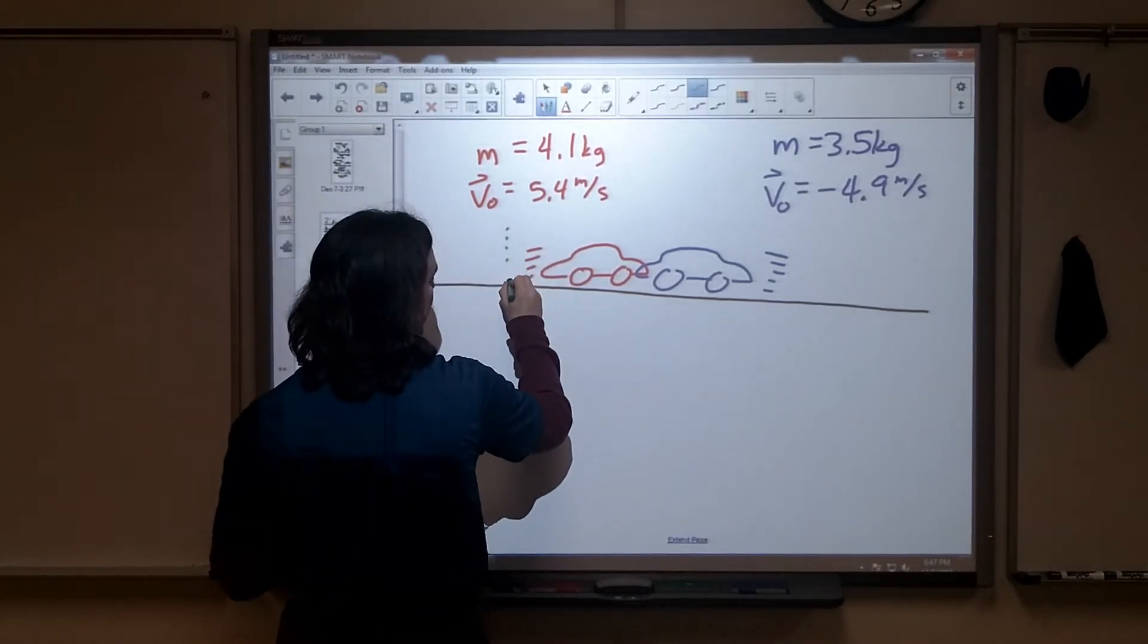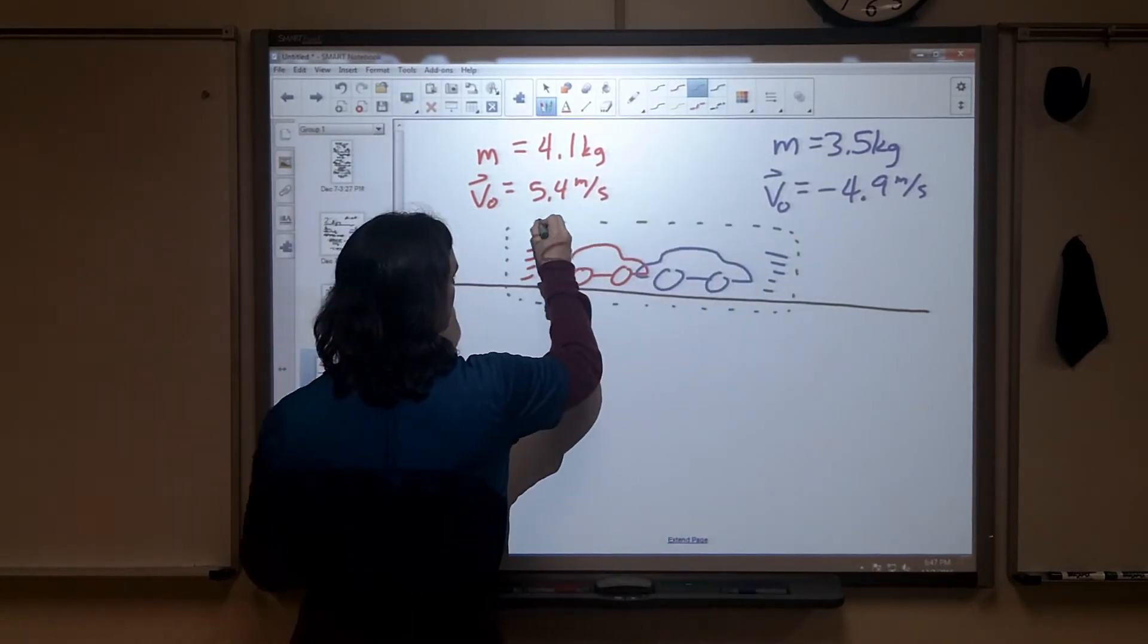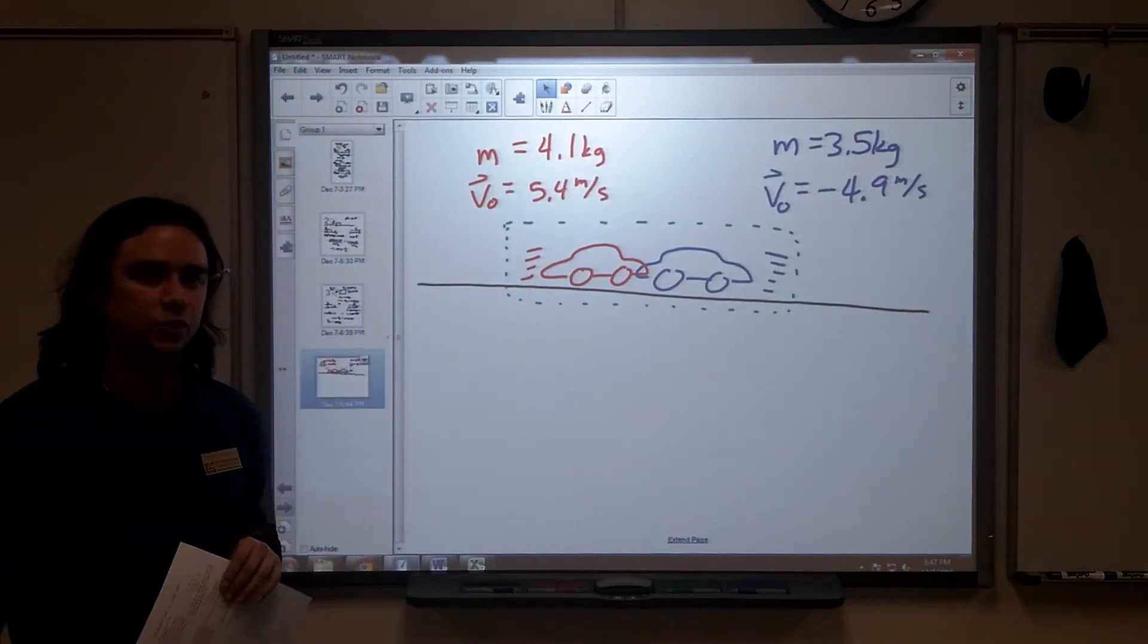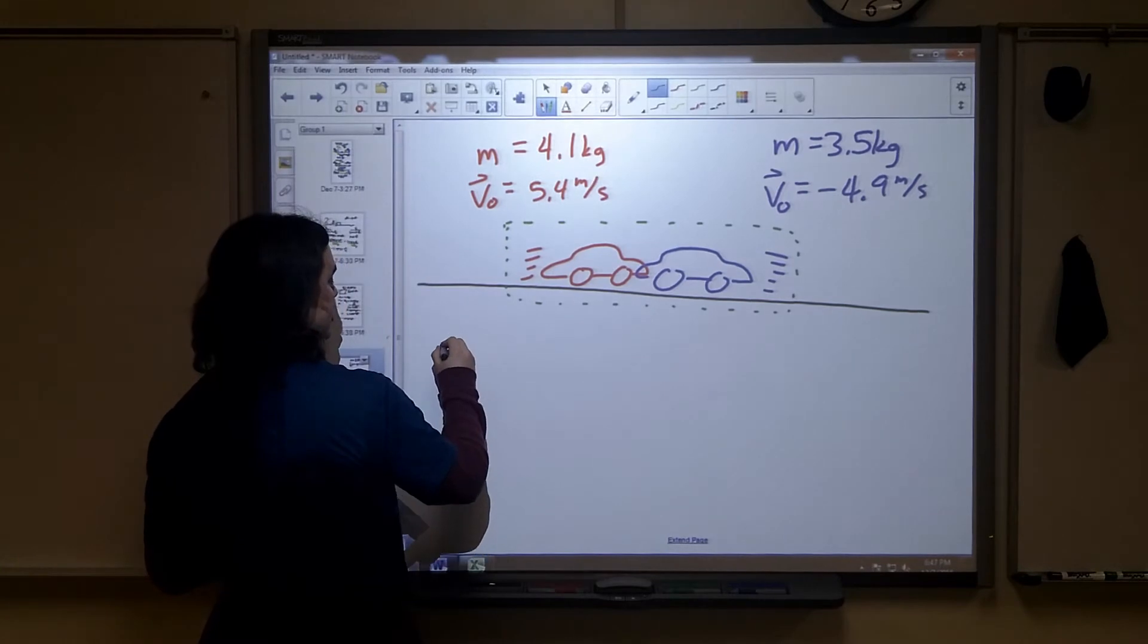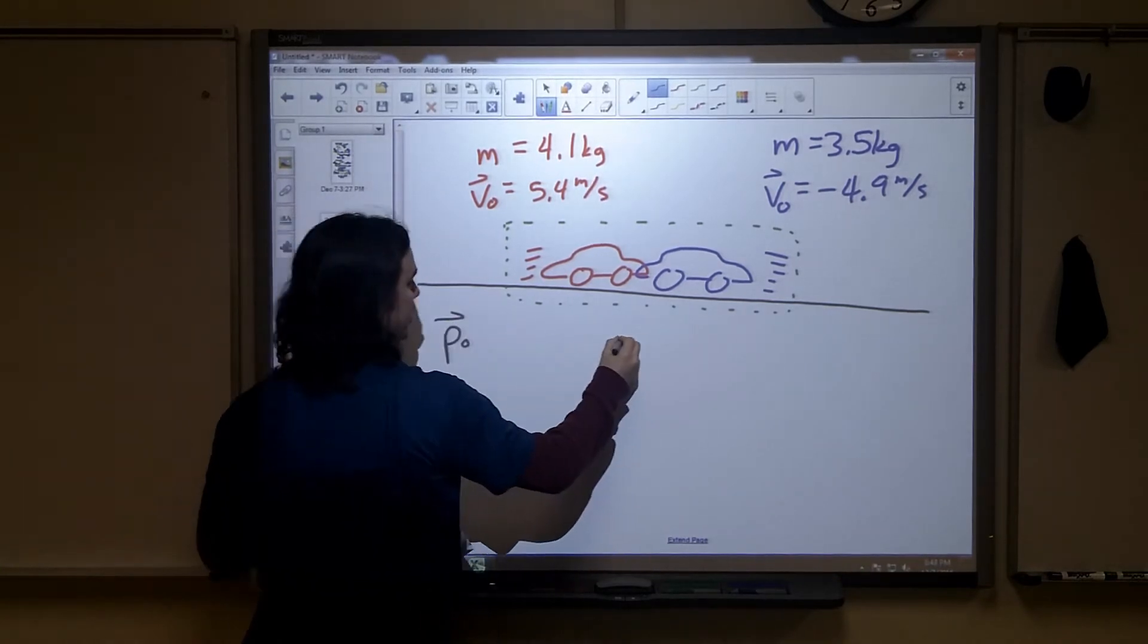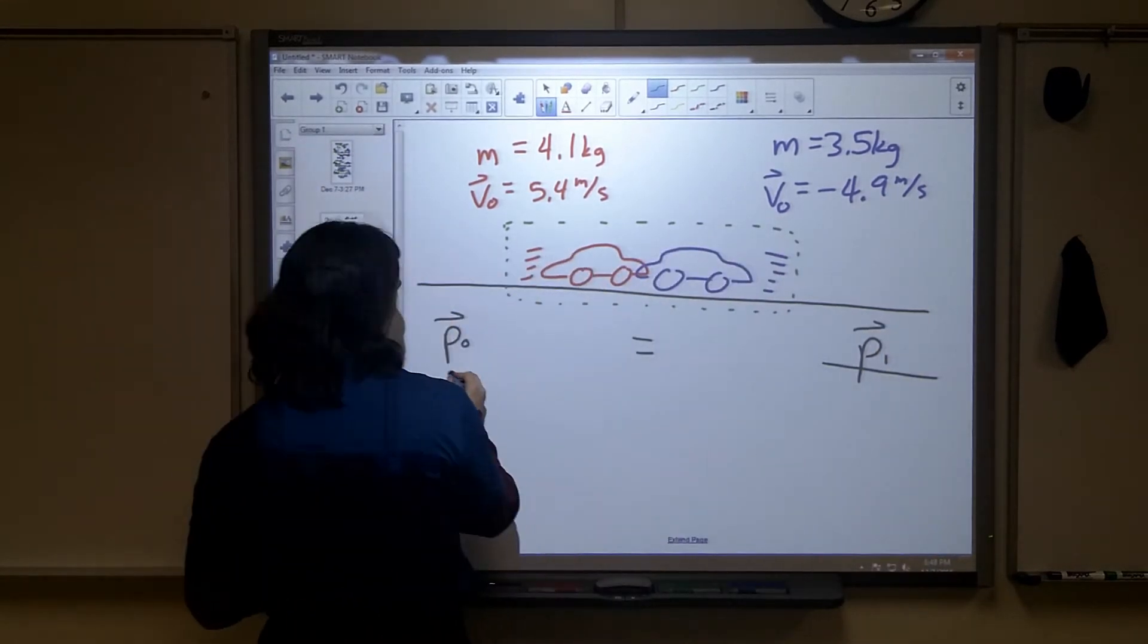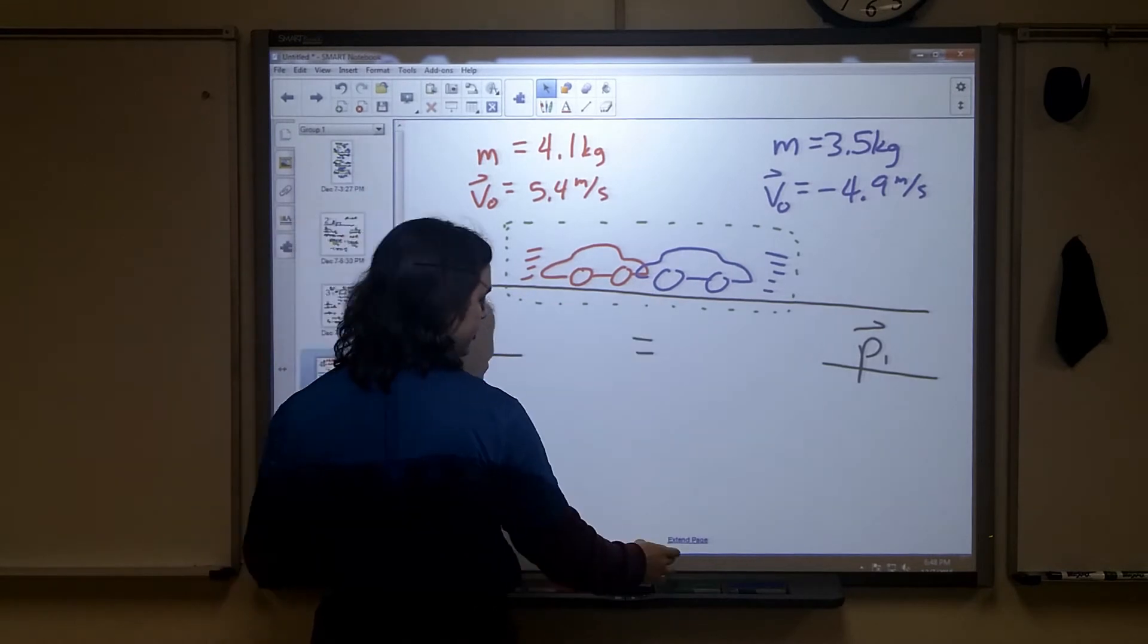Okay. If we have, and we've seen this a few times, we can set up a pretty good system of our two carts. And especially with no friction, we shouldn't have any significant external forces that are going to change my momentum and therefore the momentum will be conserved. So my initial momentum will be equal to my final momentum.